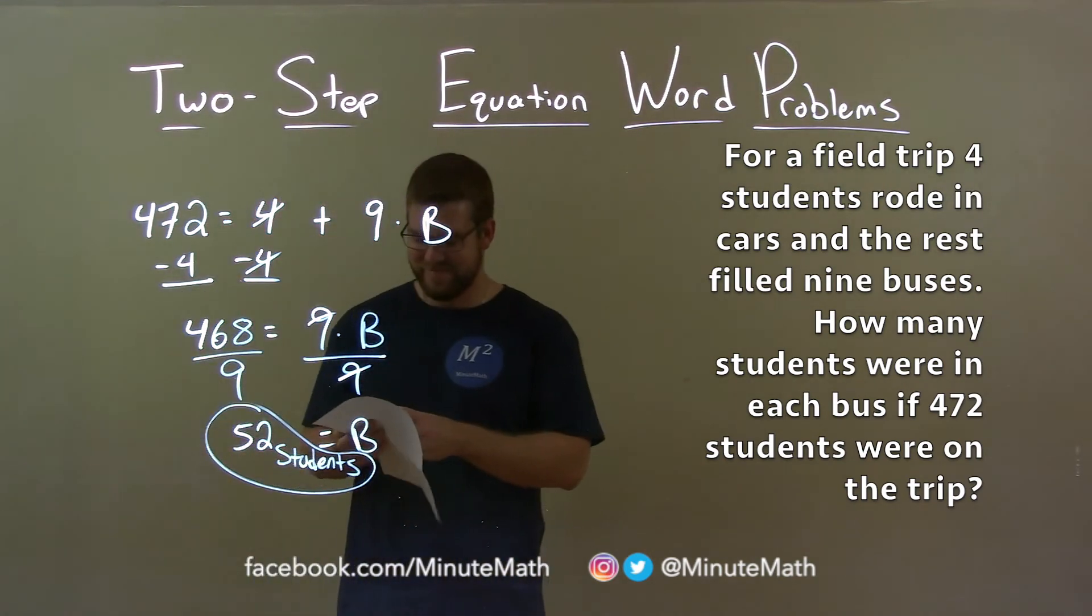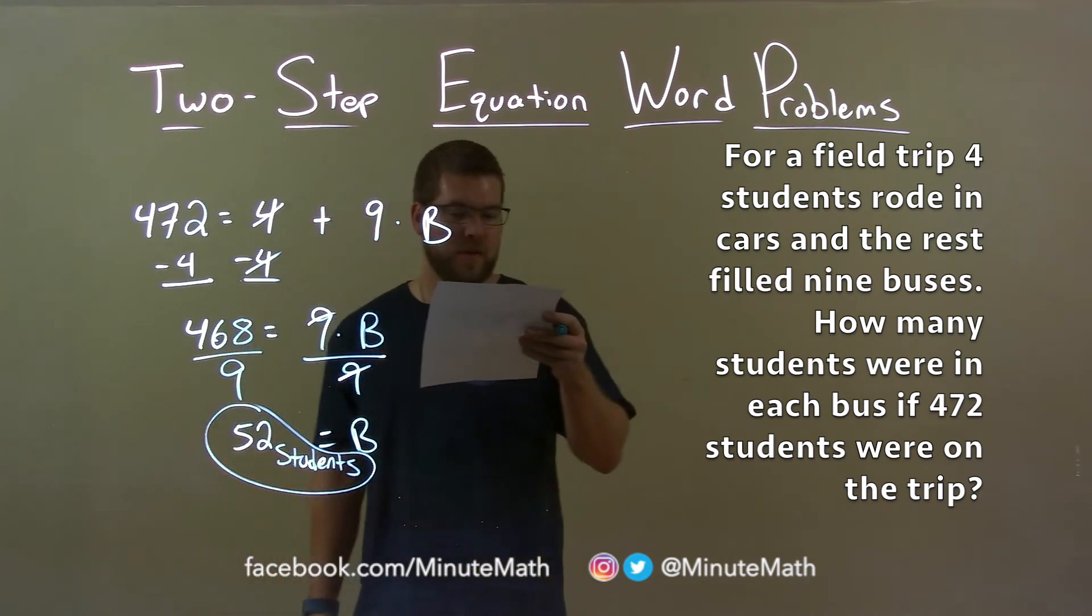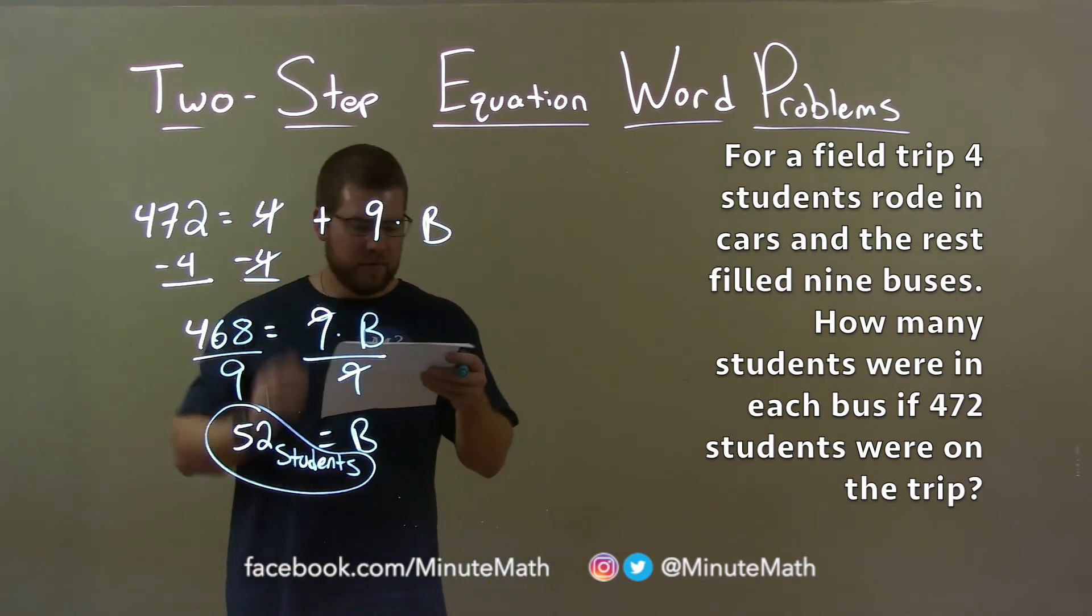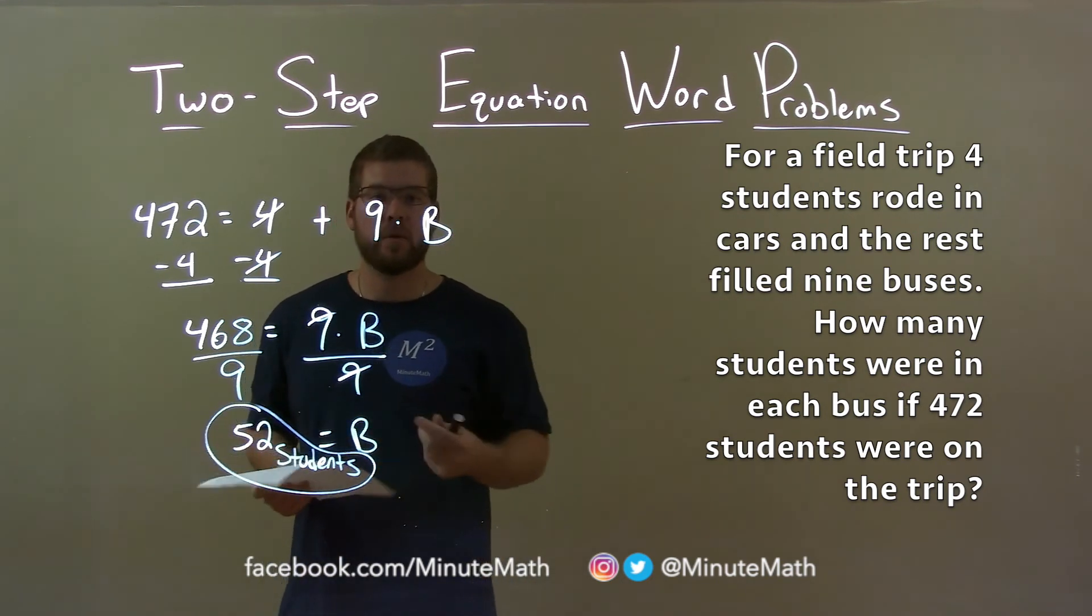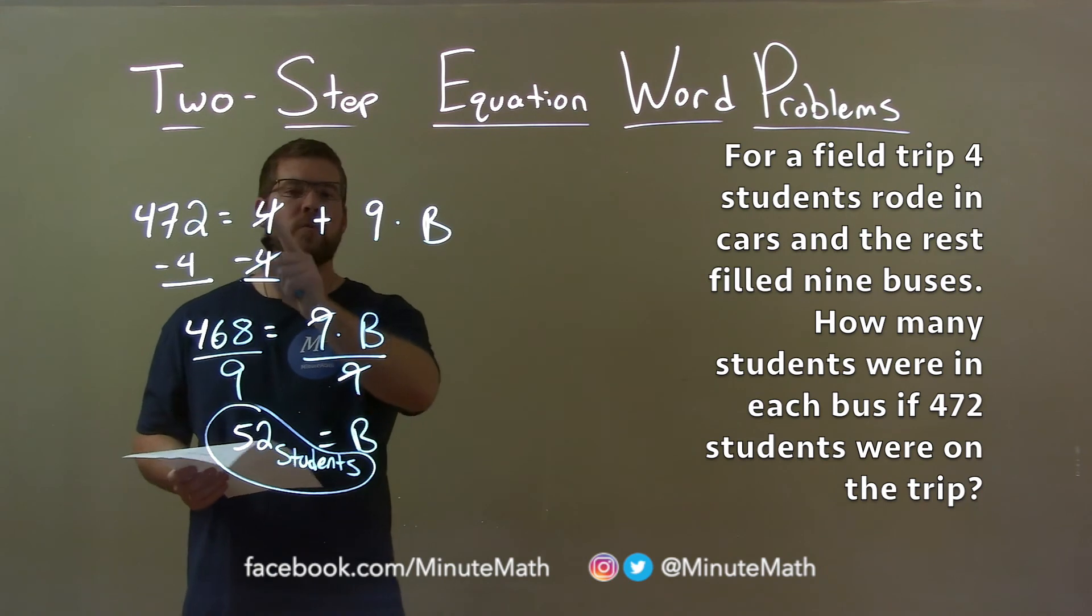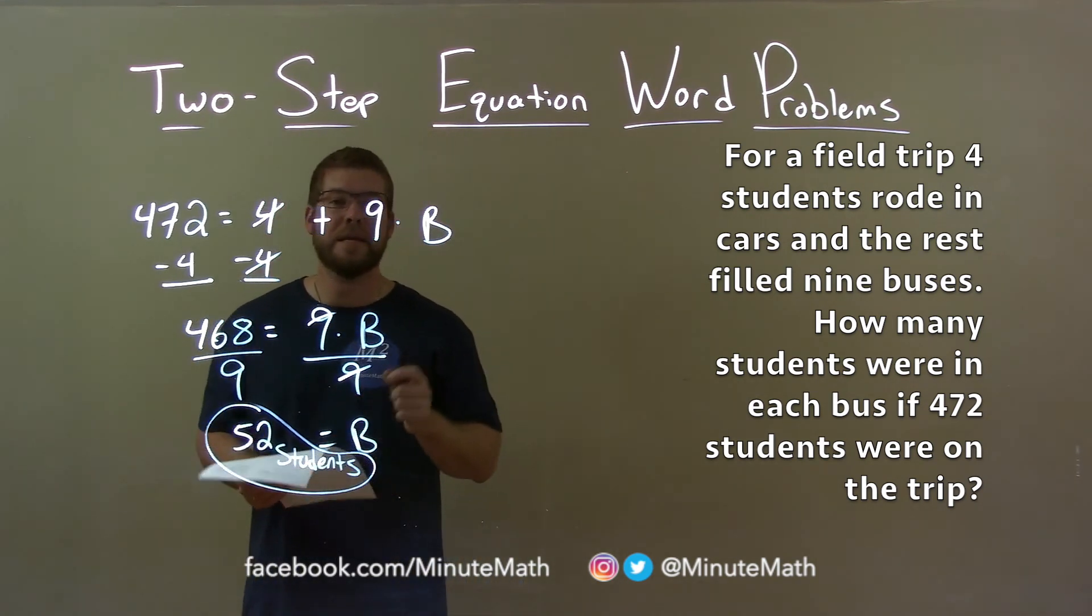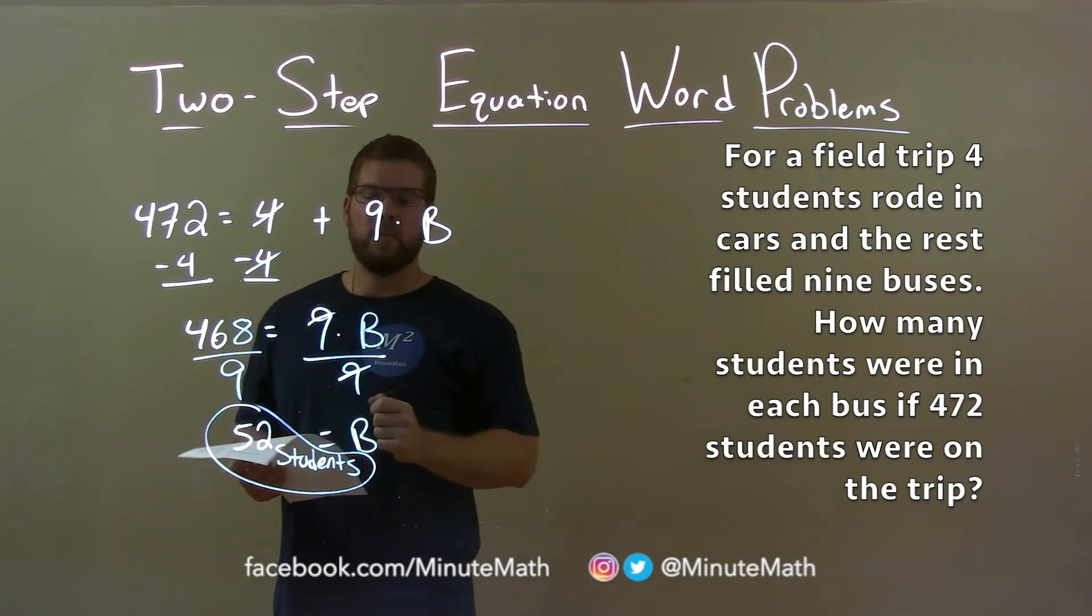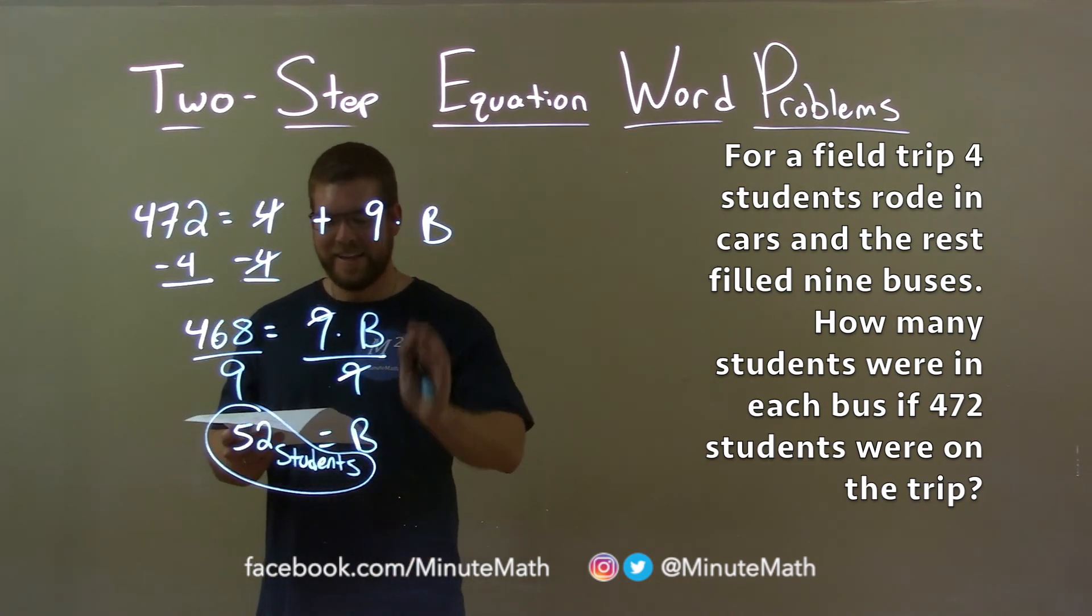52 students per bus. So quick recap: we're given that for a field trip, four students rode in cars and the rest filled nine buses. How many students were in each bus if 472 students were on the trip? With that information, I wrote this equation: 472 equals four plus nine times B, where B represents the number of students on each bus. I solved for B and got my final answer of 52 students riding each bus.